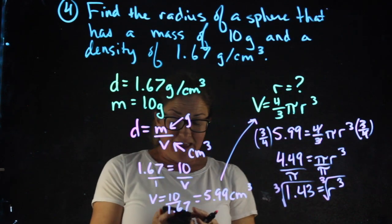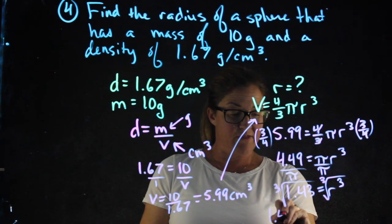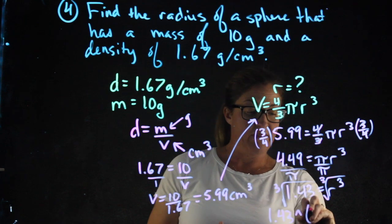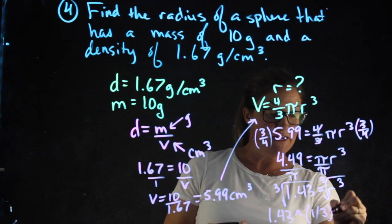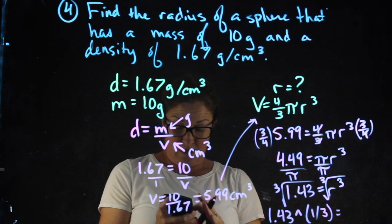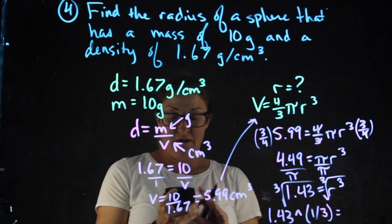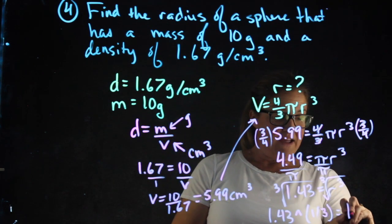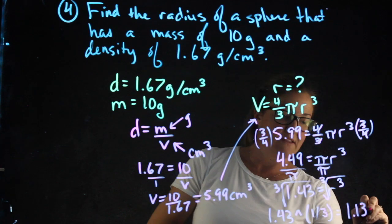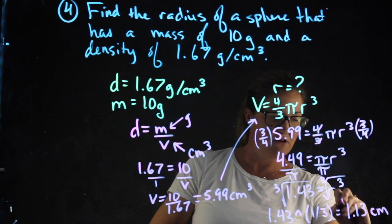So on my calculator, I do 1.43 to the 1 third power. That's the easiest way for me to do it. To the 1 third. This gives me the radius of 1.13, and this radius is in the units of centimeters.